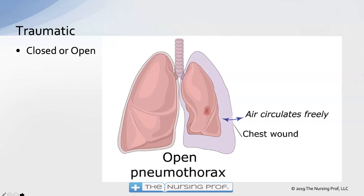A traumatic pneumothorax can be classified as either open or closed. In a closed pneumothorax, air leaks from the lung into the pleural space. In an open pneumothorax, air comes in from outside the thorax through the chest wall into the pleural space — not through the airways. Because air is moving into that pleural space, we lose the negative pressure of the vacuum and the lung collapses.